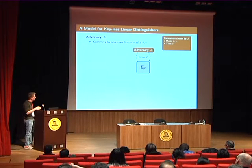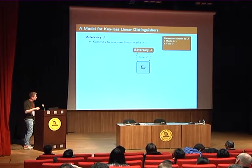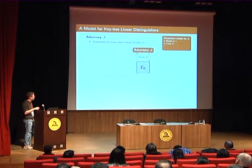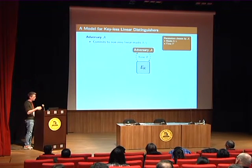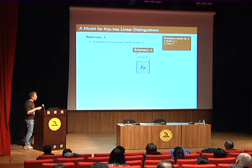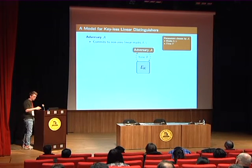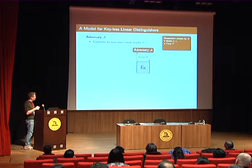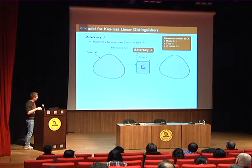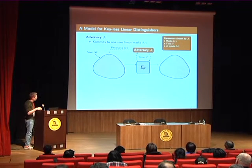The adversary is then allowed to interact with a specific instantiation of the block cipher. In the known-key setting, this is an instantiation with a particular choice of key known to the adversary; in the chosen-key setting, she chooses the key herself. She is allowed to interact with this block cipher for a particular period of time t, which is also a parameter chosen by the adversary. After time t, the adversary must produce an algorithm describing how to construct a set of inputs of size m, again a parameter chosen by the adversary.